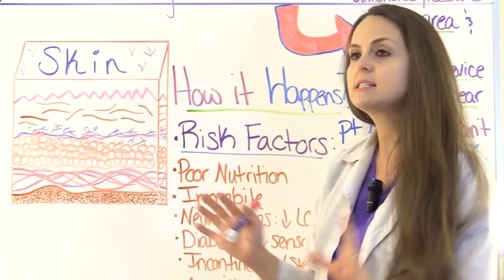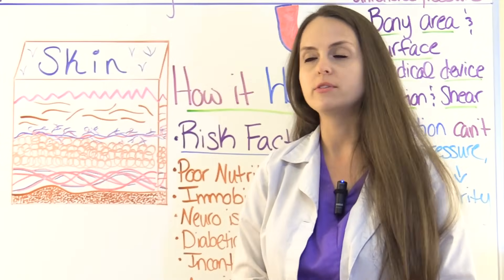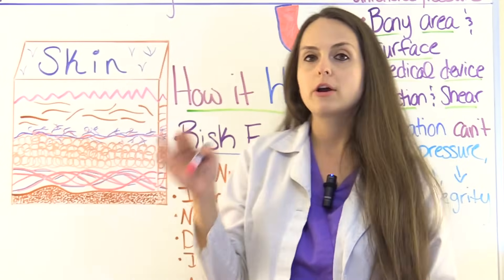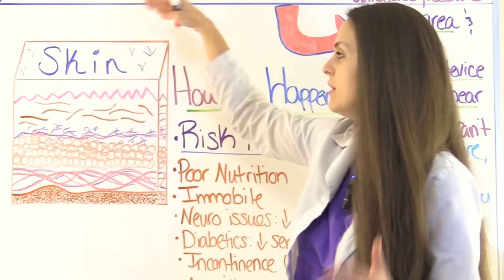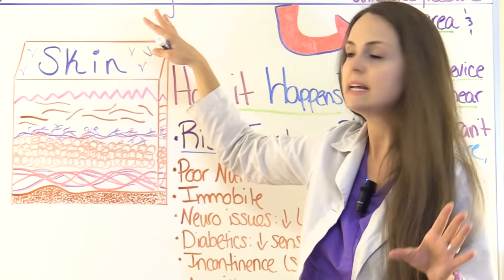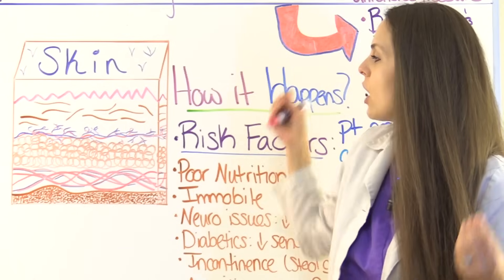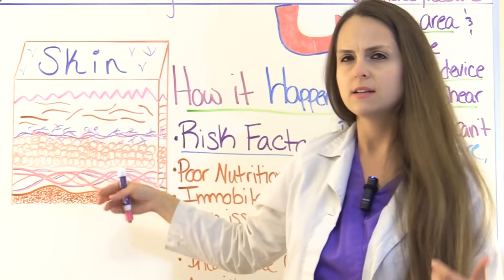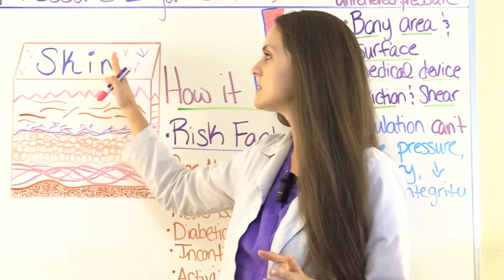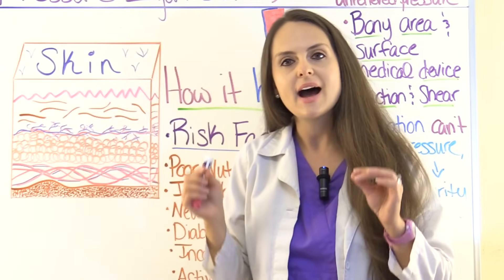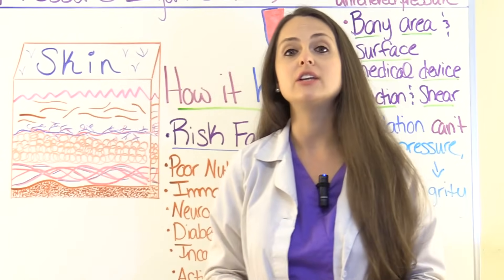There are various stages of pressure injury, from stage one to stage four. When looking at pressure injuries, we examine the depth of how much the injury has penetrated. For example, does the injury extend down into the subcutaneous tissue, which would be stage three? Or does it go as far as exposing muscle, tendon, ligament, and bone, which is stage four? Or is the top layer of skin completely intact but very red and non-blanching, which is stage one?